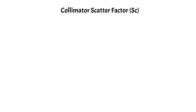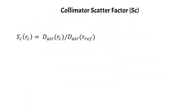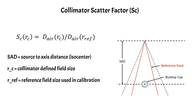Let's start with the collimator scatter factor, or Sc. The definition of the collimator scatter factor is a ratio of doses measured in air — one with the field size equal to R sub C, and the other equal to the reference field size R sub ref. The collimator scatter factor is always measured at SAD, and you measure it with a small buildup cap to mitigate the effects of the buildup region. The reference field size is shown in red, and the collimated field size is the black dotted lines. SAD is the source-to-axis distance, R sub C is the collimator-defined field size, and R sub ref is the field size used during calibration of the linear accelerator.